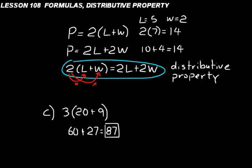Something to consider here: when you have a number — or it could be a letter — outside parentheses like that, there's no operation symbol there. No plus, minus, multiplication, or division symbol right where that green arrow is. There's just 3 and a parenthesis. When you see that, know that you can use the distributive property, and know that it means multiplication.